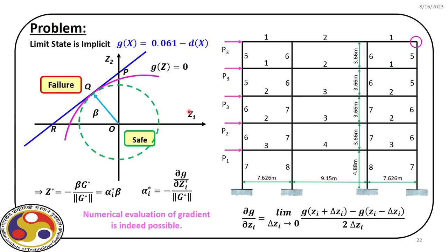However, in this case we have an implicit performance function. We do not know the exact expression of D when we identify the set of vector random variables X. Whenever we have an implicit performance function, we can add different models to solve the reliability analysis — we will discuss this further as we progress. But here in this lecture, we are going to solve this problem and see how we can find out the gradient, which is the most essential step in first order reliability analysis. We first need to evaluate direction cosines, which requires evaluating the first derivative of G with respect to Z, and based on that we evaluate the new design point.